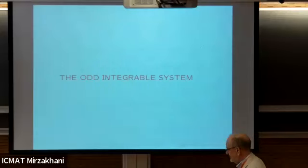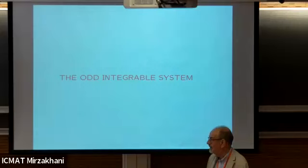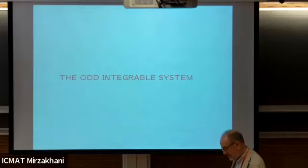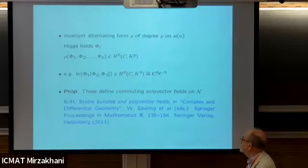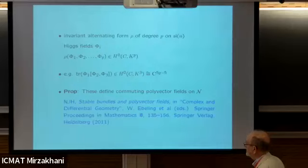That is one way of looking at what I would call the even integrable system - the one that's been around all these years. This is an interpretation in terms of the geometry of symmetric powers of the tangent bundle on the moduli space of stable bundles. The odd one is this: instead of taking symmetric invariant polynomials on the algebra, we look at alternating invariant forms on the algebra - like generators of the cohomology of the group.